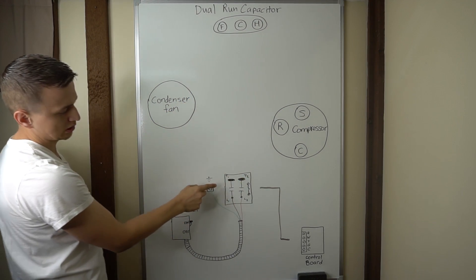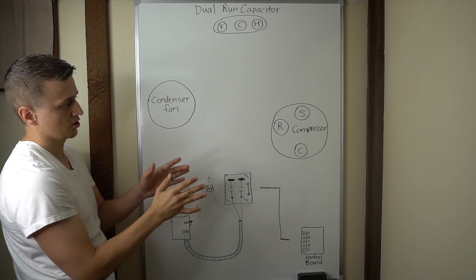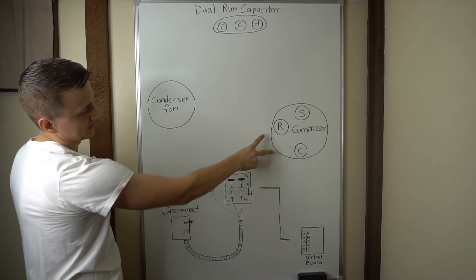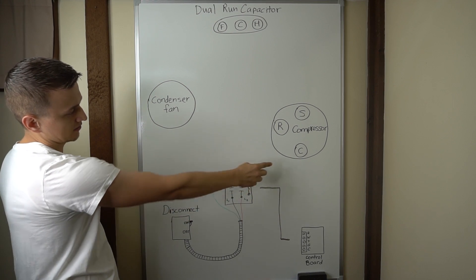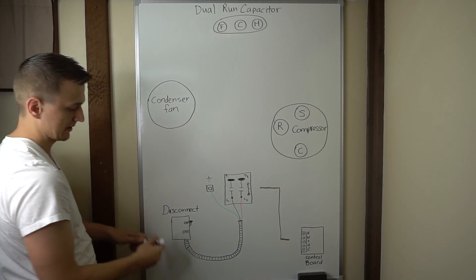And the other two, the run and the common, will go on either side of the contactor. All you got to do is make sure that you don't hook up both of these to the same side of the contactor. They do have to be on opposite sides.